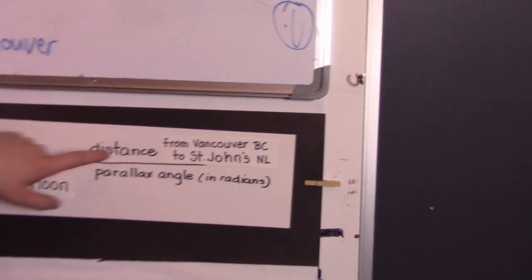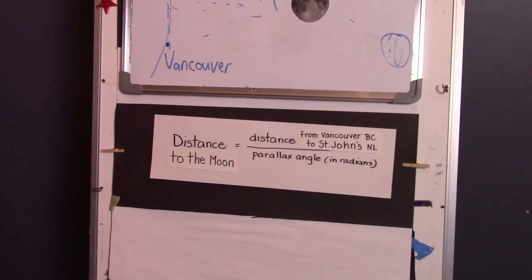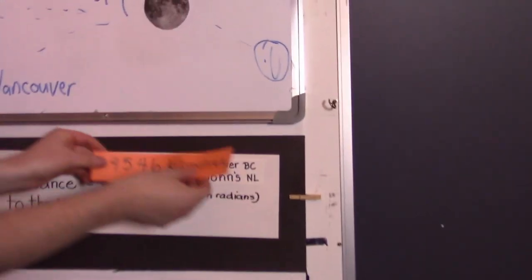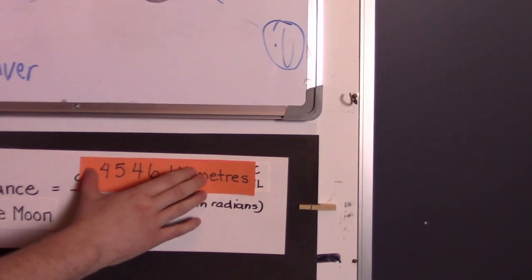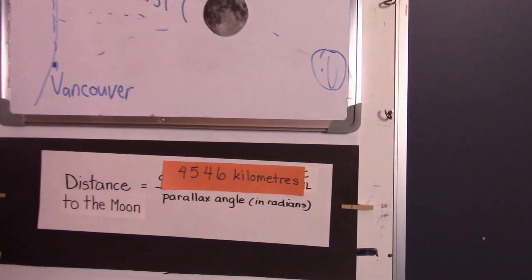Now the distance from Vancouver to St. John's, I measured to be 4,546 kilometers. And the parallax angle needs to be in radians, so we're going to have to go to our angle formula again.